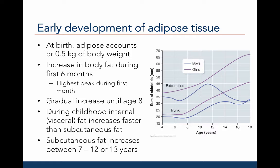Visceral fat is thought to be more dangerous because it surrounds the vital organs and is considered to be a greater risk factor for metabolic disease. Subcutaneous fat increases between the ages of seven to twelve or about thirteen.